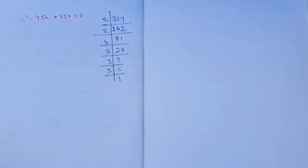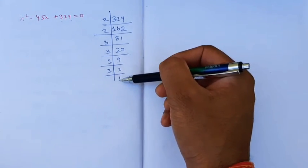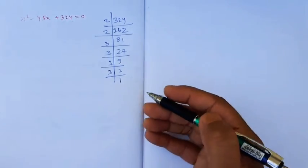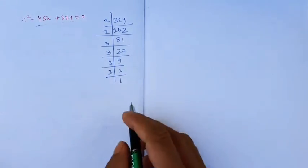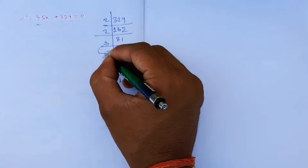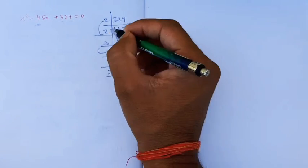Now we need to find two numbers that multiply to 324 and add to 45. Checking: 36 × 9 = 324.